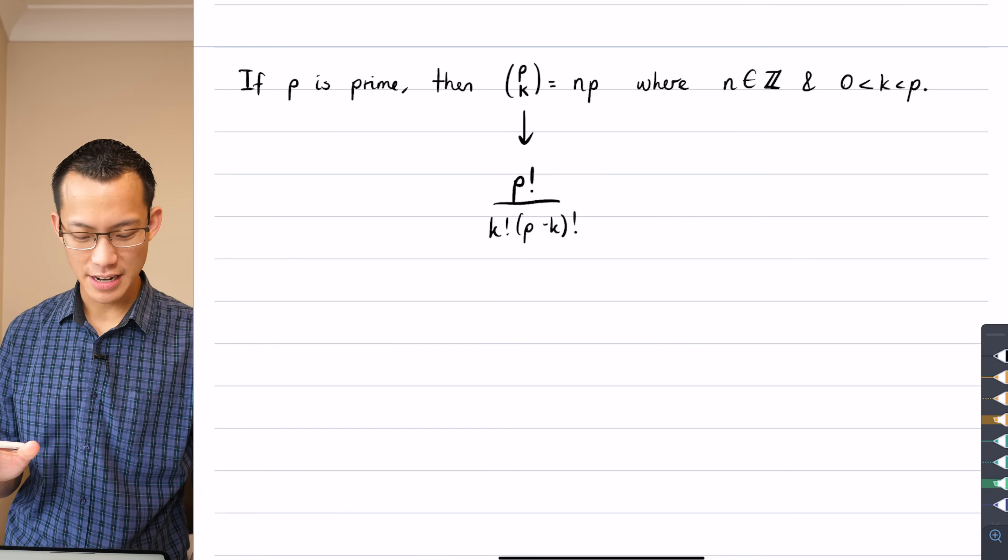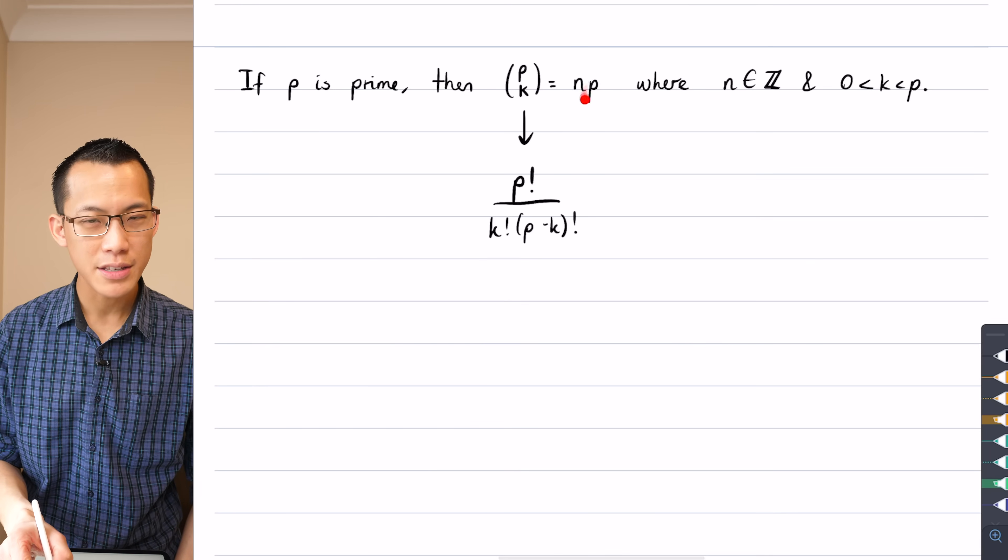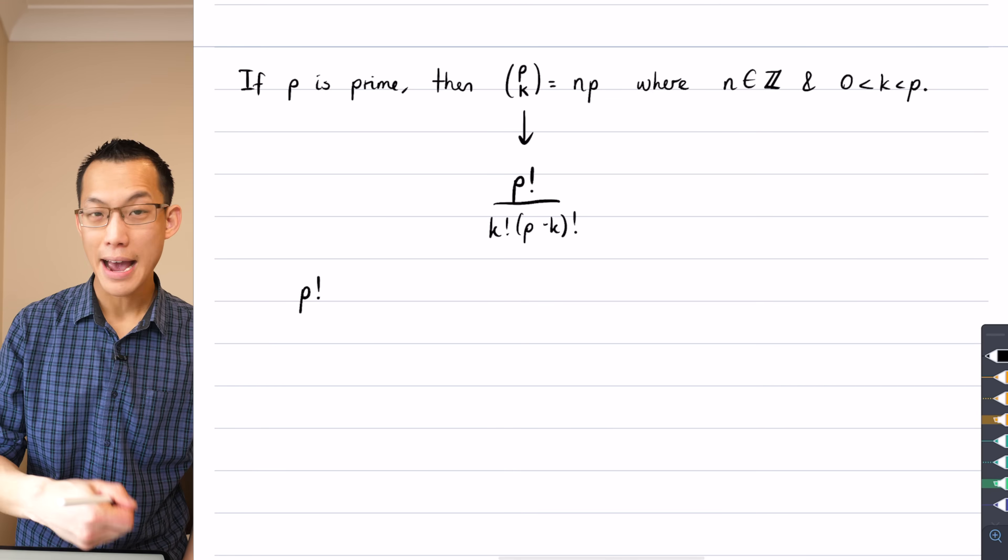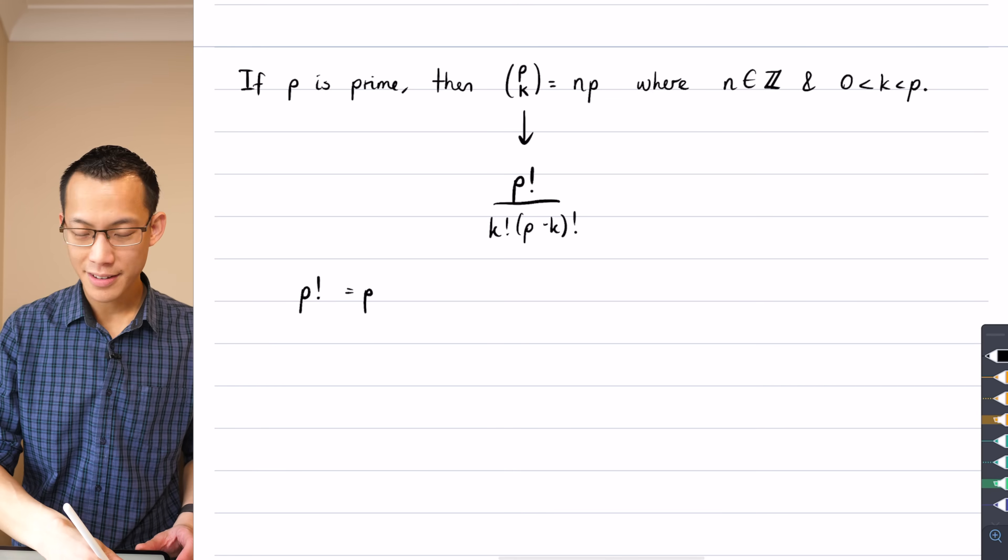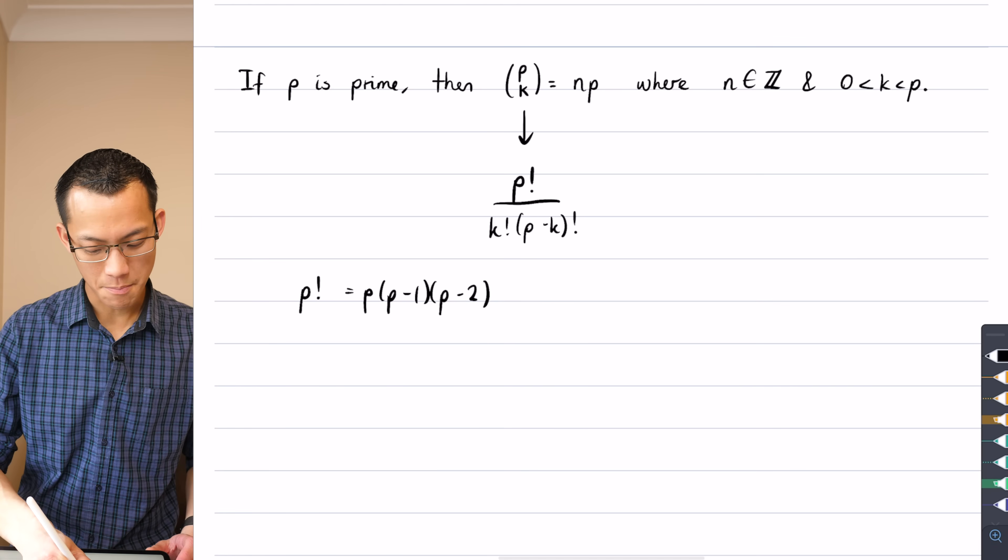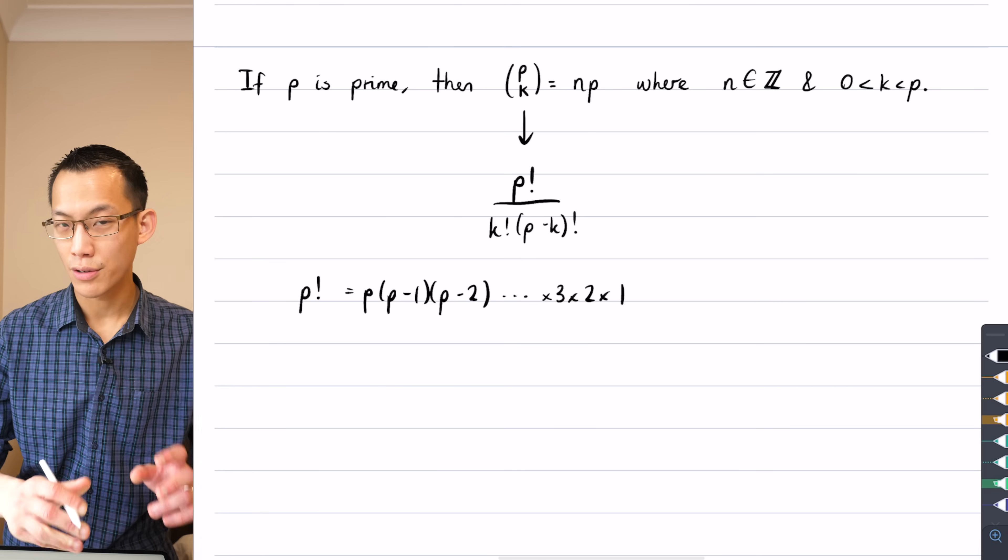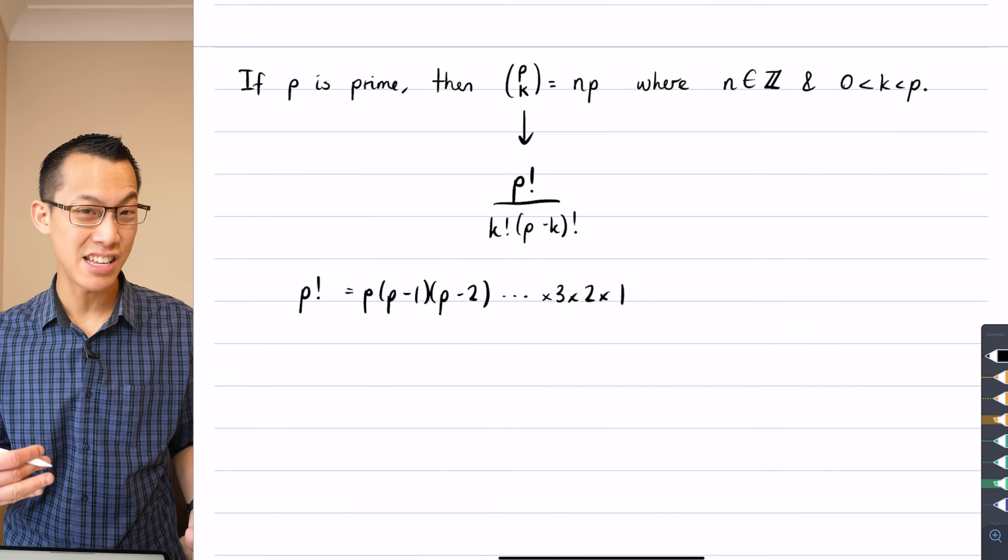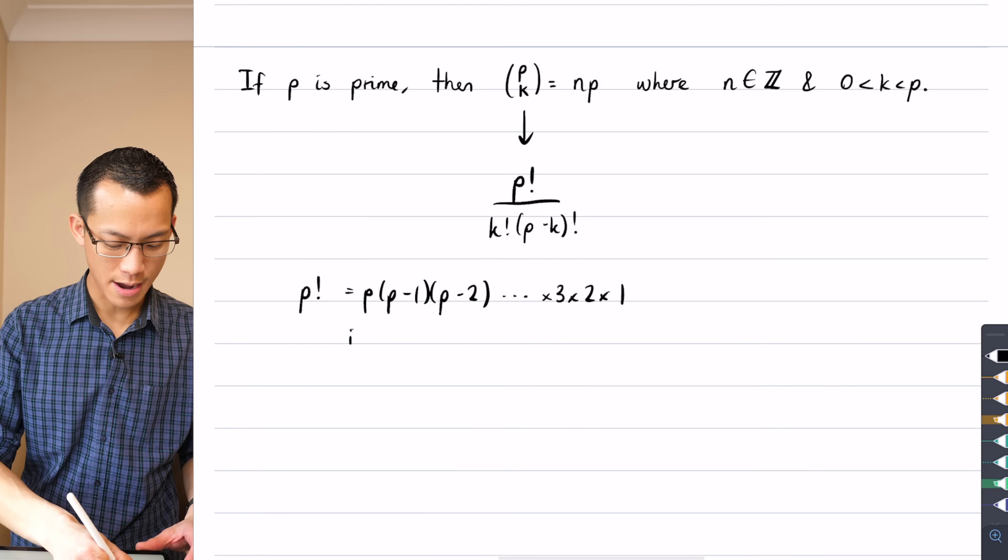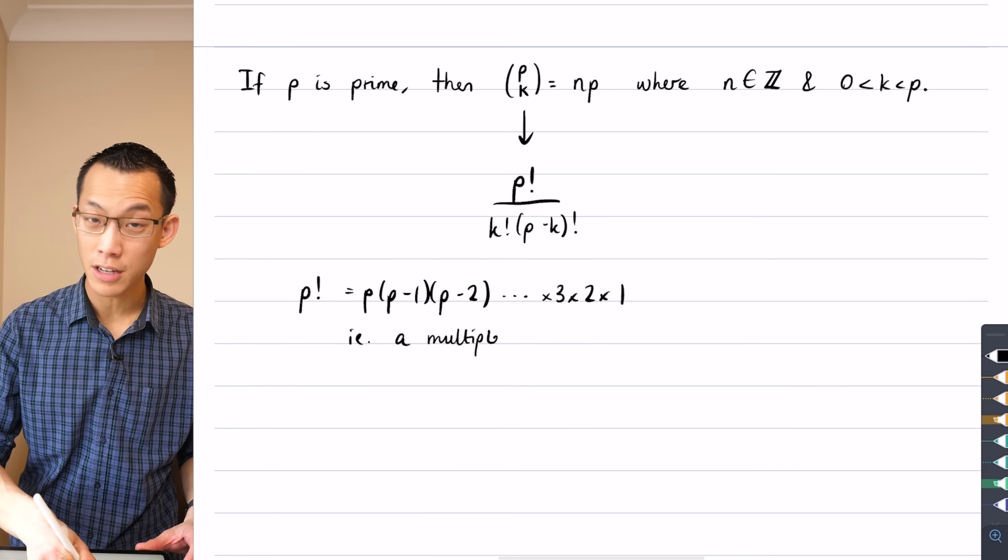Now the first bit of it, this is not so hard. Because you can say, wait a second, I know there's going to be a multiple of P somewhere in the top because P factorial by definition is P times P minus one times P minus two, multiplied all the way down until you get to one. So clearly P factorial on its own is a multiple of P. So I can say, i.e. a multiple of P. So that's great. If you just think about the numerator.